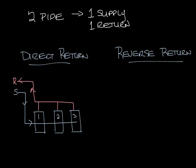So what you see is that in this first unit it has the shortest supply path and the shortest return path. And in the last unit you've got the longest supply path and the longest return path.